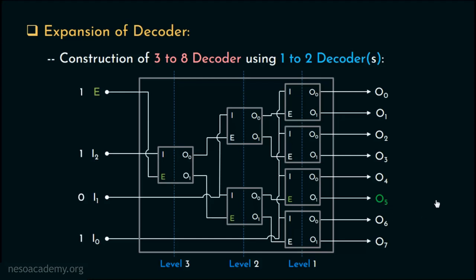Binary input sequence 101 means 5 in decimal — and yes, for input sequence 101, the output line O5 got activated. So this is how we can construct a 3-to-8 decoder using 4 + 2 + 1, that is 7 one-to-two decoders.